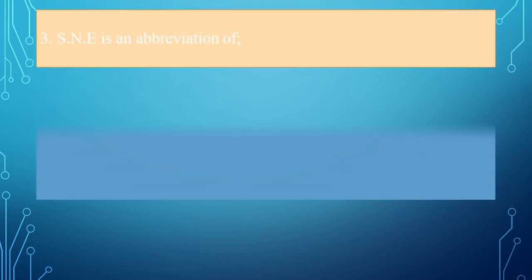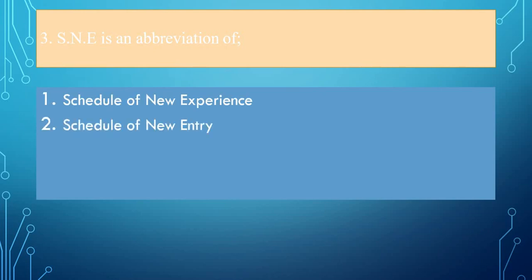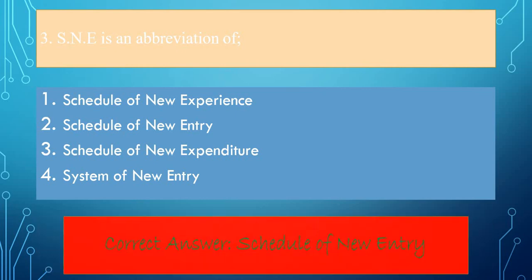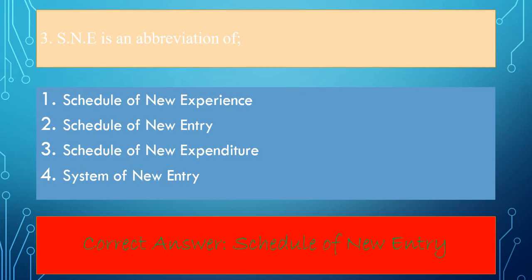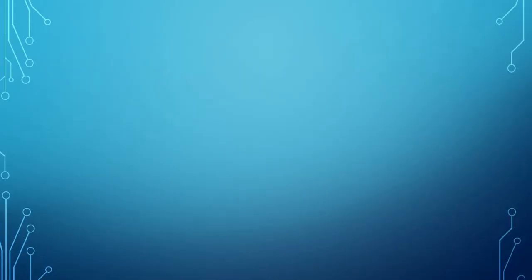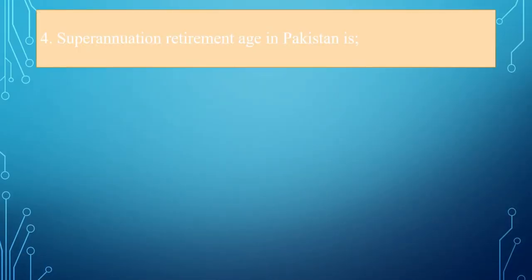Come to the third question: S.N.E. is an abbreviation of schedule of new experience, schedule of new entry, schedule of new expenditure, or system of new entry? The correct answer is schedule of new entry.